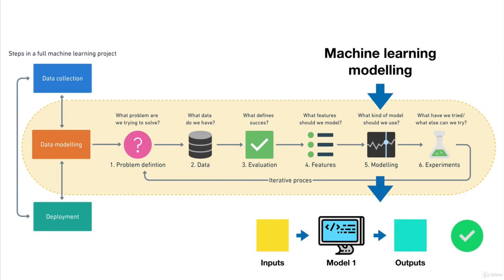So you decide to report what you found. And after your initial report, your project manager asks to see if the model can be improved to get better results. So you do your research and find there's another approach you can take. This is step six — experimenting.